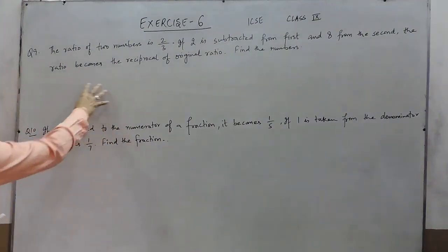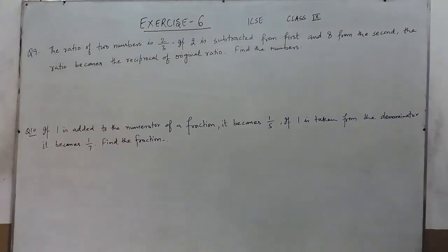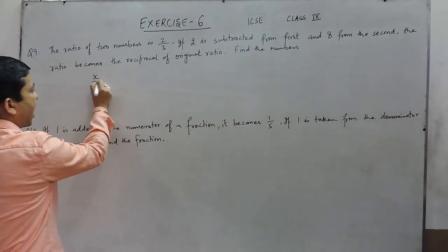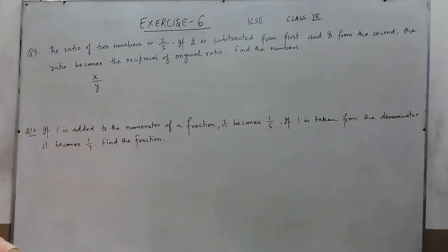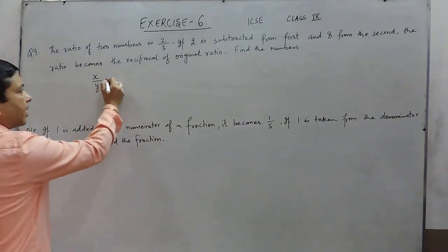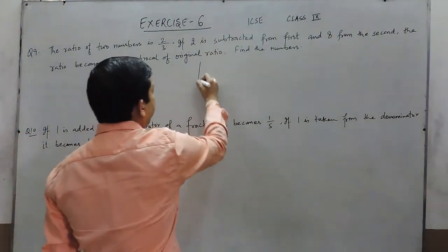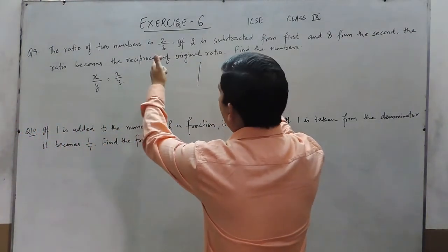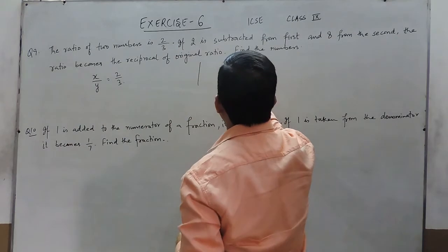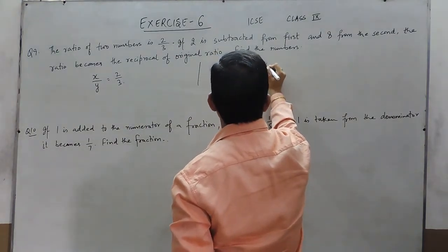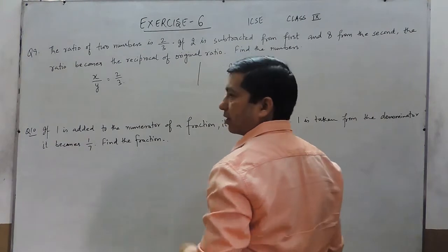Hello everyone. Question number 9: the ratio of two numbers is 2 is to 3. There are two ways of thinking about it — either we take the numbers as x upon y and the ratio as 2 is to 3, or we can say that if the ratio of two numbers is 2 is to 3, that means one number is 2x and the other is 3x.